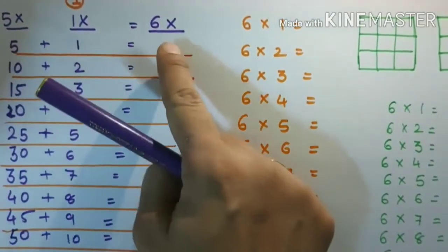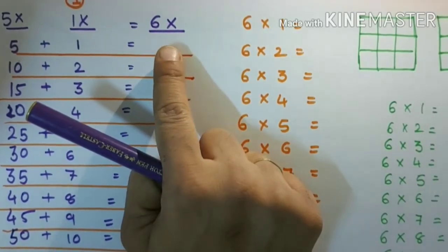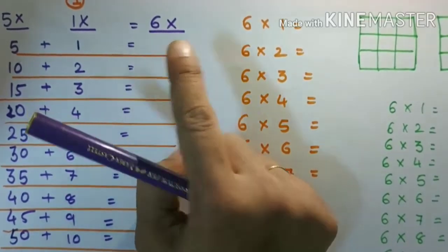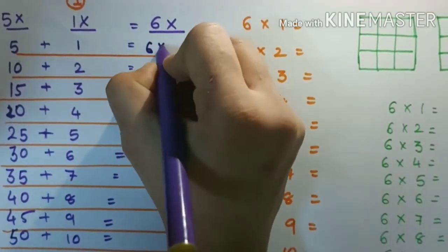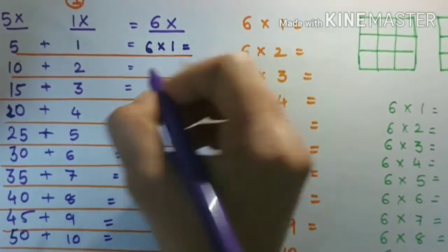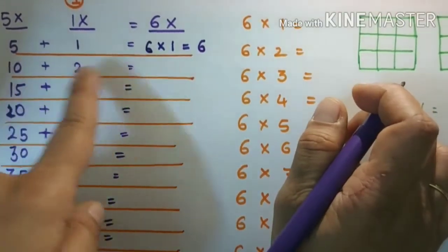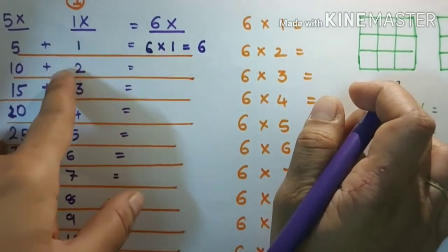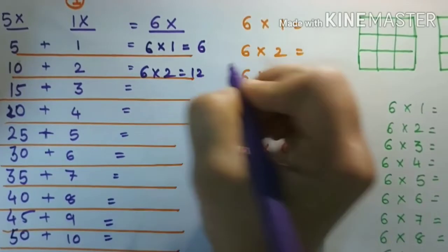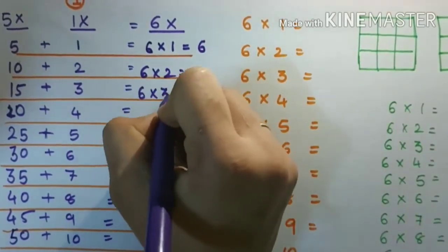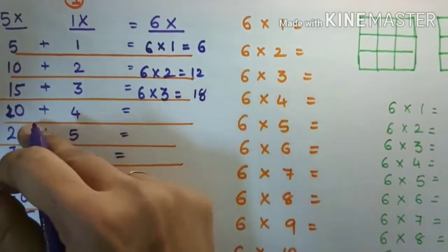Five plus one is equal to six, so the answer of six ones are six. Like this way, six twos: ten plus two is equal to twelve. Six threes: fifteen plus three is equal to eighteen. Six fours are...